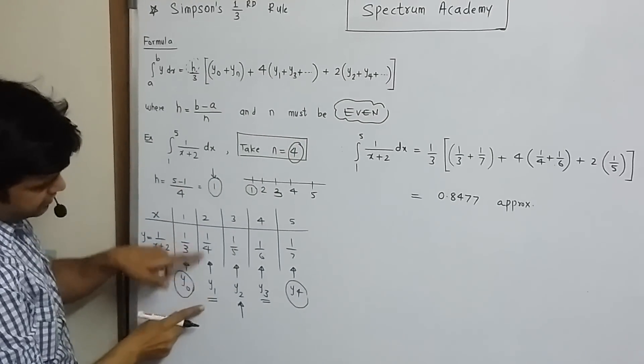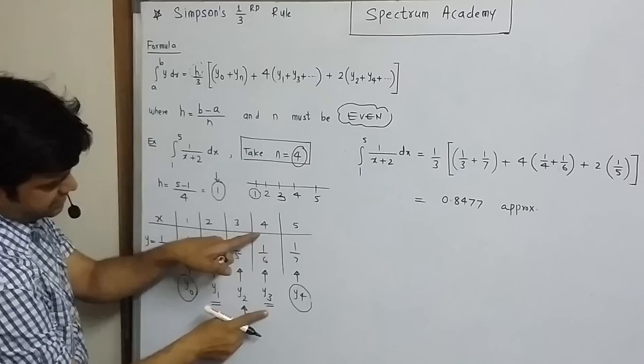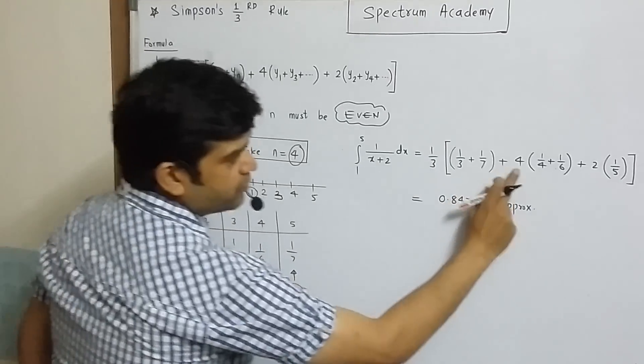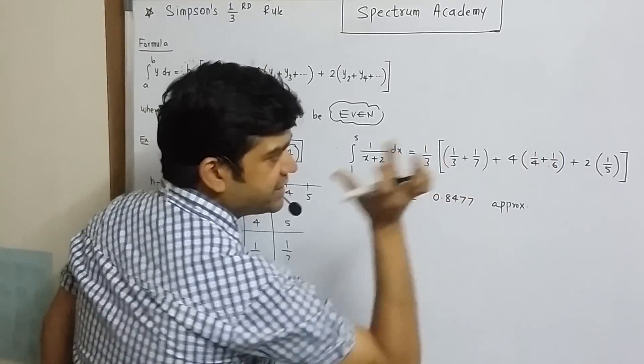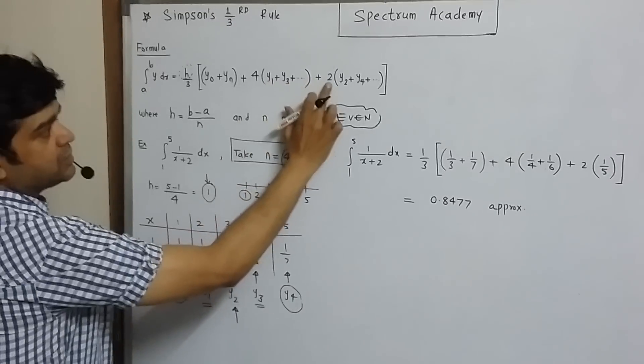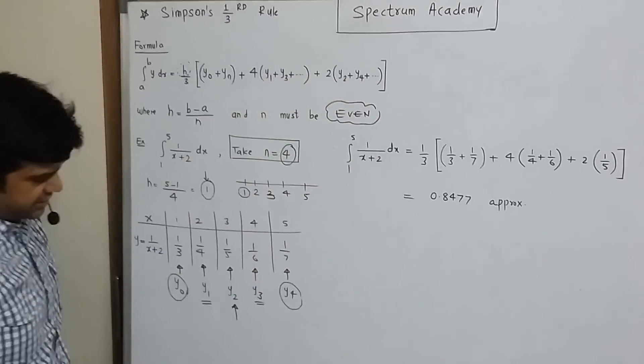Odd ordinates are what? y1, that is 1 by 4, y3 and 1 by 6. So, 4 times sum of odd ordinates plus 2 times sum of even ordinates.